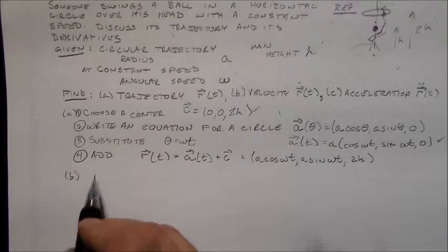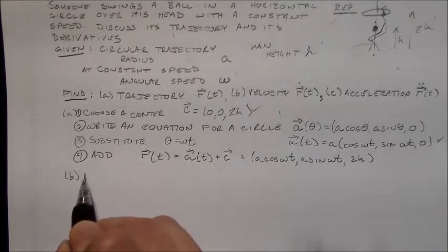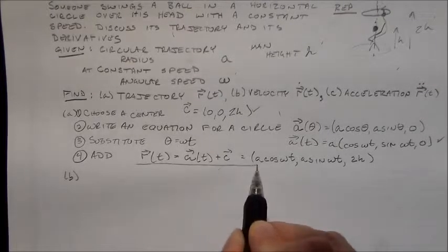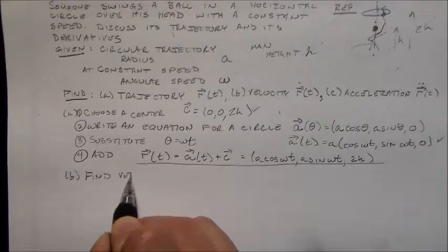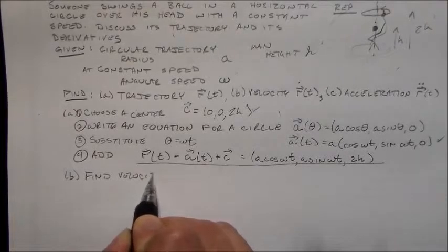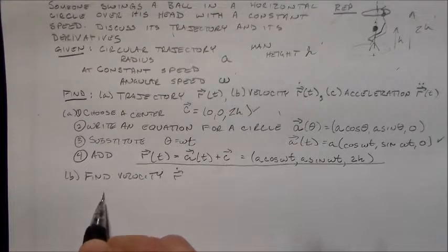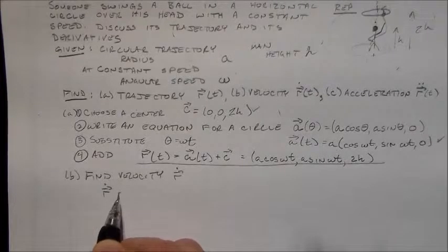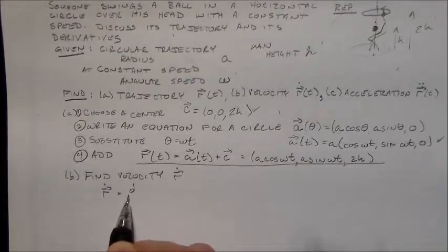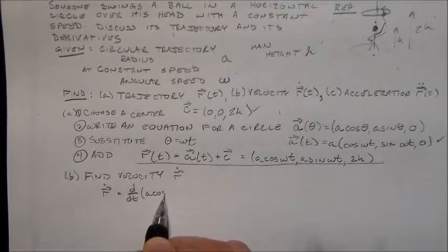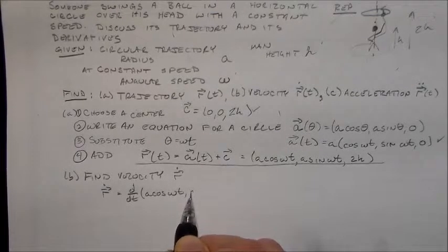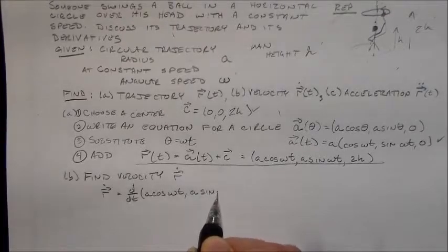And now 2b, we're going to find its derivative. Find the velocity, and we do that by taking the derivative. All right, so r dot is equal to d dt of this vector. A cosine omega t, a sine omega t, and 2h.